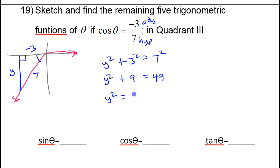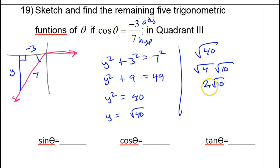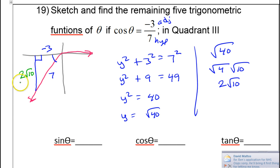So y² = 40, meaning y = √40. This simplifies because √40 = √(4 × 10) = √4 × √10 = 2√10. So this y-value is 2√10 — but don't forget, this is going to be negative: −2√10.